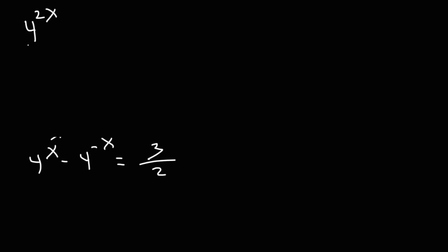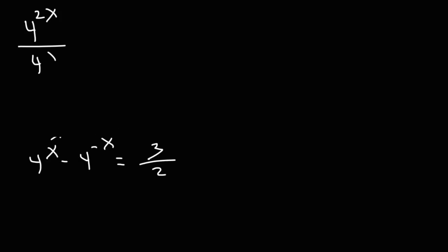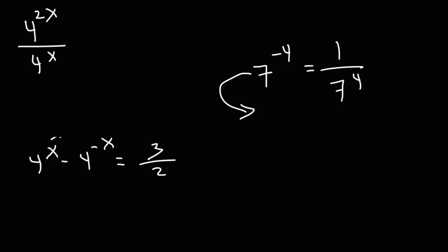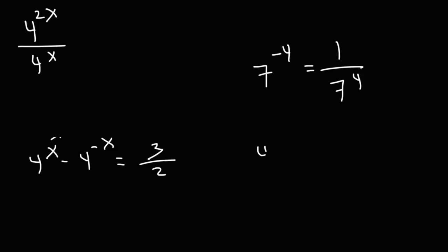Now, what can we do with 4 raised to the negative x? To review negative exponents: 7 raised to the negative 4 is the same as 1 over 7 to the 4. You can move the base number to the bottom of a fraction, and this allows you to change the sign of the exponent from negative to positive, or vice versa. So 4 to the negative x is equivalent to 1 over 4 to the x. By moving the 4 to the bottom of the fraction, we change negative x to positive x.